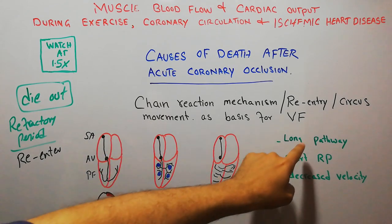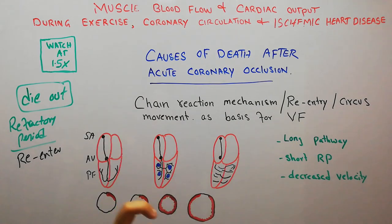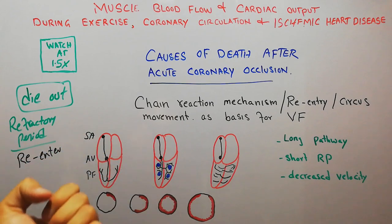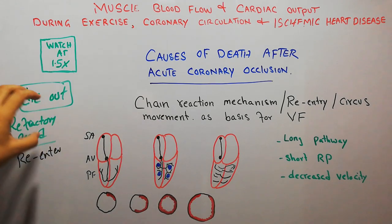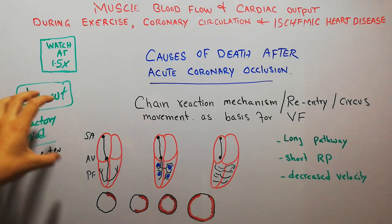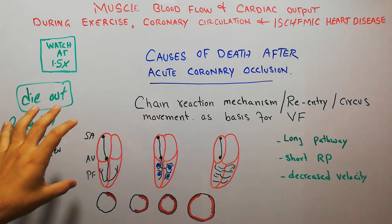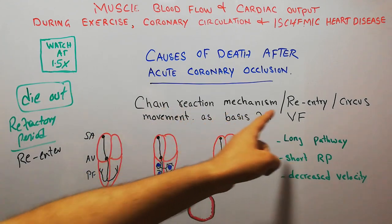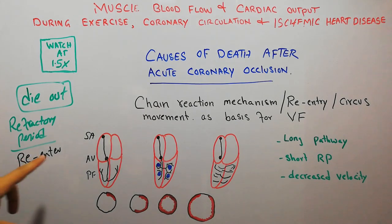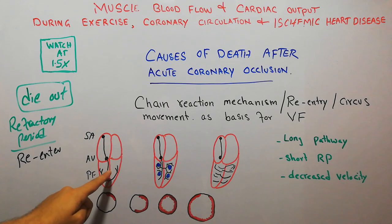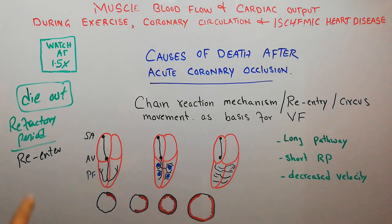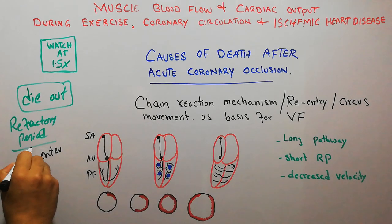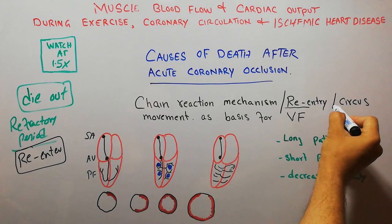If the pathway is prolonged, and if the refractory period — the time in which the heart cannot be activated even with a large amount of impulse or big current — if that refractory period is shortened, then the current can re-enter. And finally, if the velocity — the speed with which the impulse comes from the SA node through the AV node and then the Purkinje fibers — if the velocity of the impulse is decreased, then all of this can lead to re-entry phenomena.